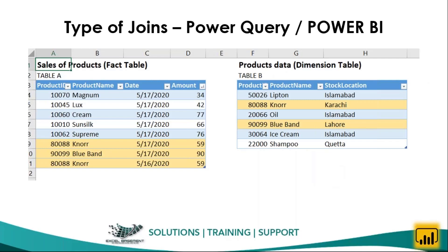Now let's look at an example. We have two tables. The first table on the left side reflects sales of products and has four columns: product ID, product name, dates, and respective amounts. This table is known as a fact table. On the right side, we have another table containing product ID, product name, and an additional column called stock location.